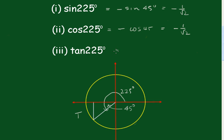And the tangent of 225, that will be positive, the tangent of 45. And the tangent of 45 is just 1.